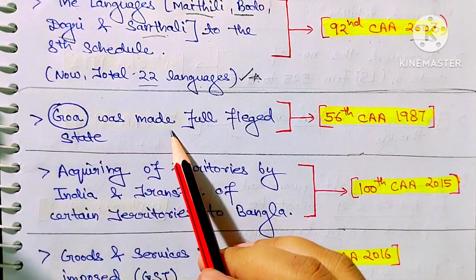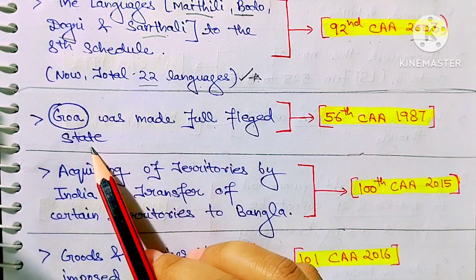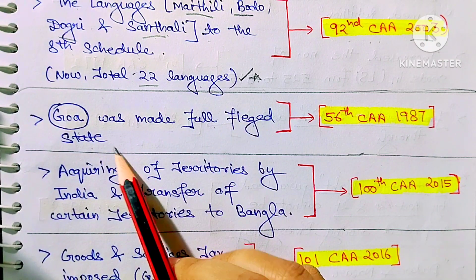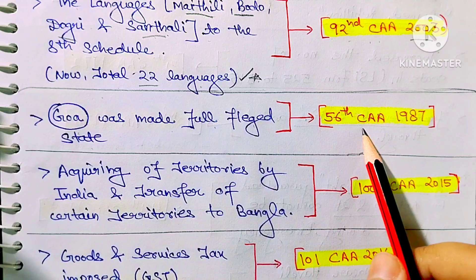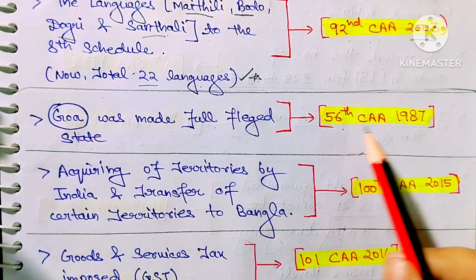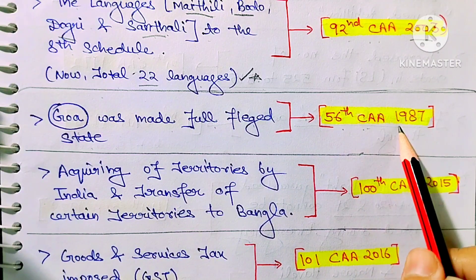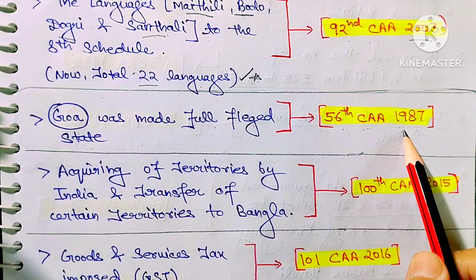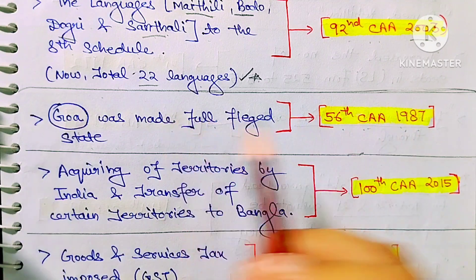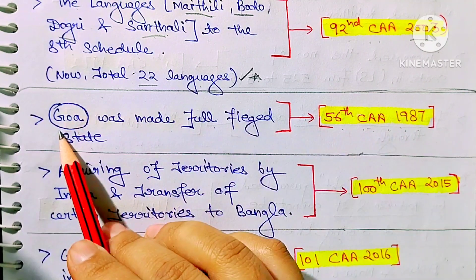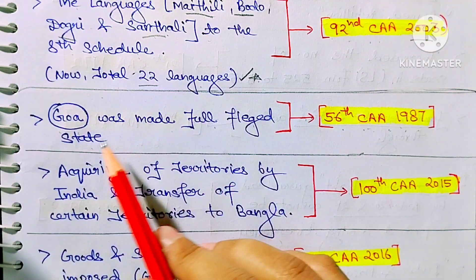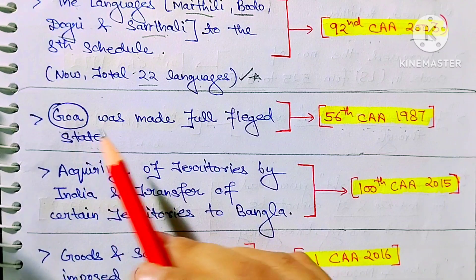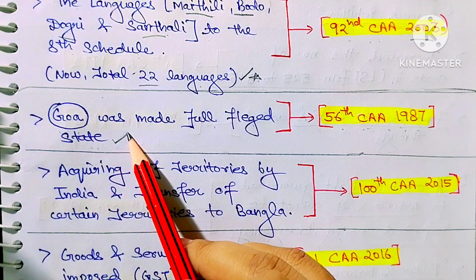Next: Goa was made a full-fledged state in India through the 56th Amendment Act 1987. Through this amendment act, Goa was granted full statehood.